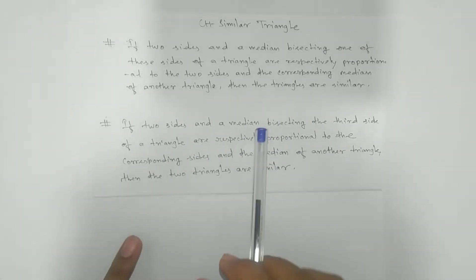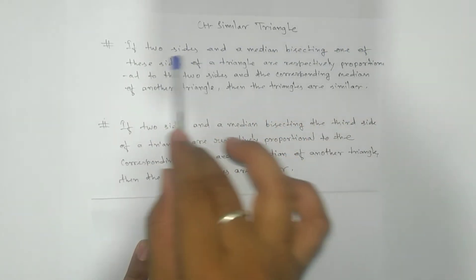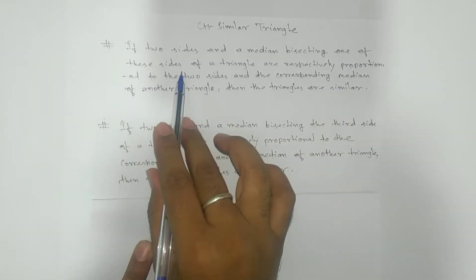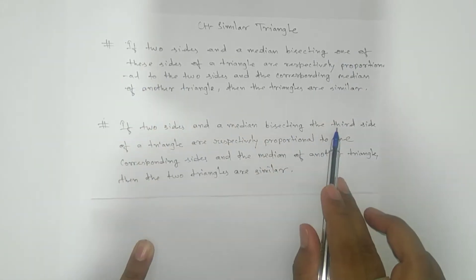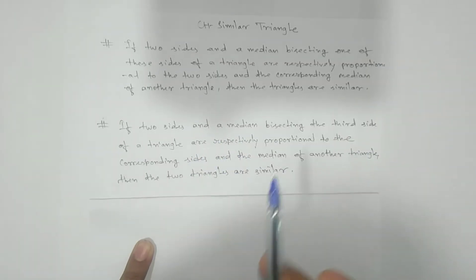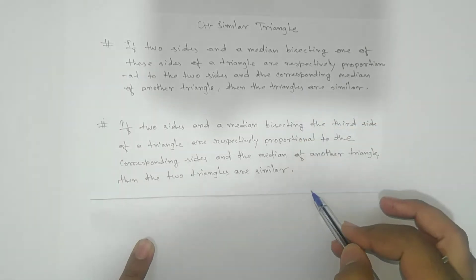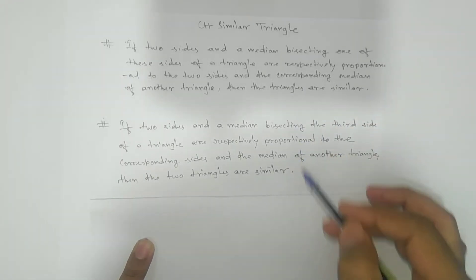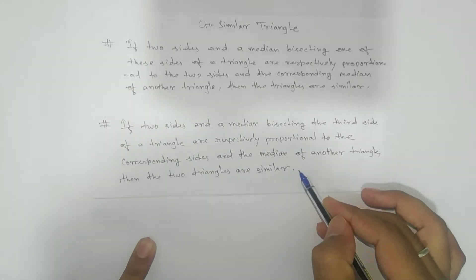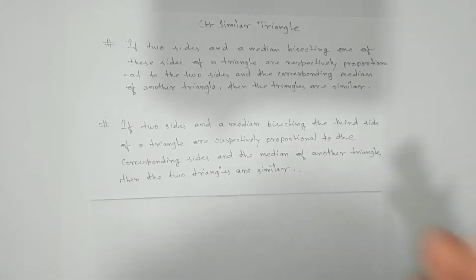The difference is: in one problem, two sides and a median bisecting one of those two sides is given, whereas in the other, the median bisects the third side of the triangle. That is the key difference between the two — the rest is the same. This second one is quite lengthy compared to the first, though not harder.